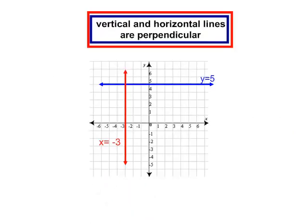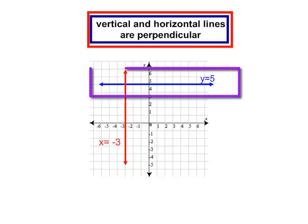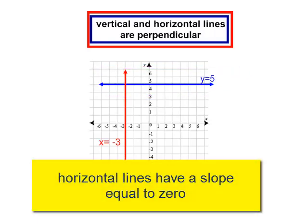Vertical and horizontal lines are perpendicular. The line y equals 5 is a horizontal line. Horizontal lines, y equal lines, have a slope. It just happens to be 0.